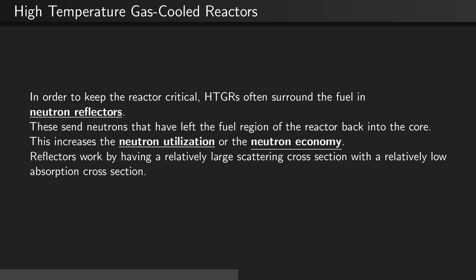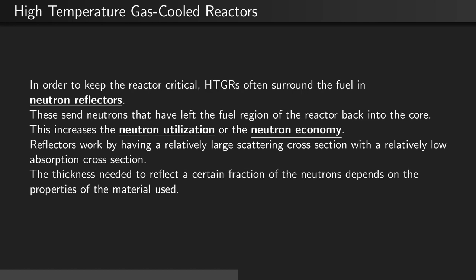Reflectors work by having a relatively large scattering cross-section with a relatively low absorption cross-section. The thickness needed to reflect a certain fraction of the neutrons depends on the properties of the material used.